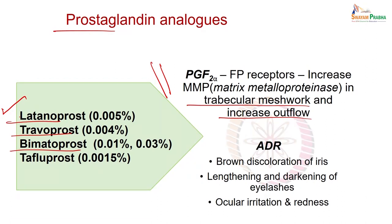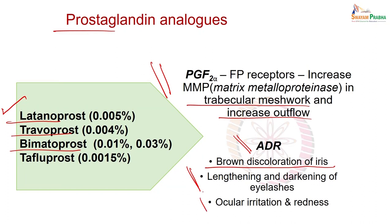Prostaglandin analogues have become the first line of treatment in many countries. Adverse drug reactions include brown discoloration of the iris, which is cosmetically sometimes a problem, lengthening and darkening of eyelashes — which is very evident sometimes — and ocular irritation and redness.